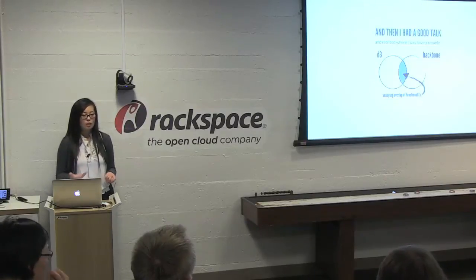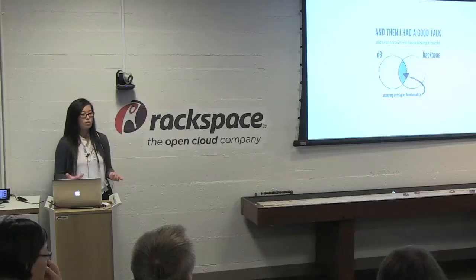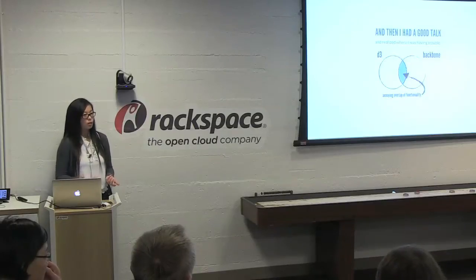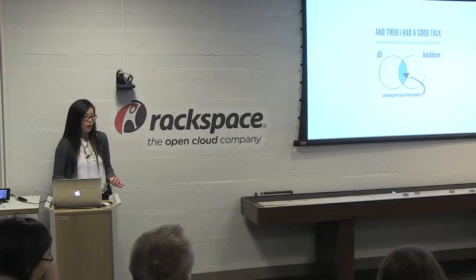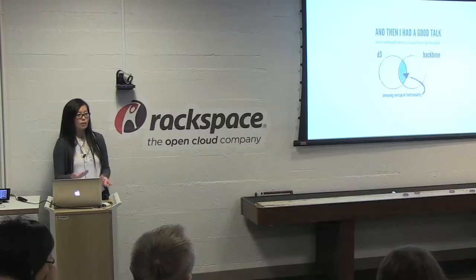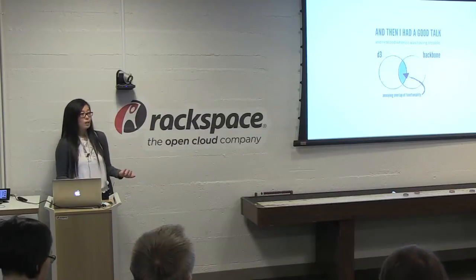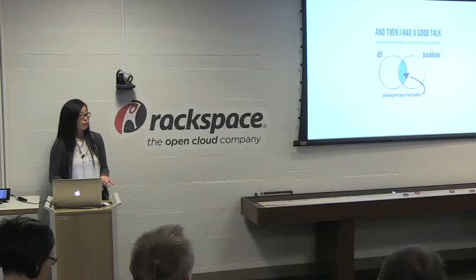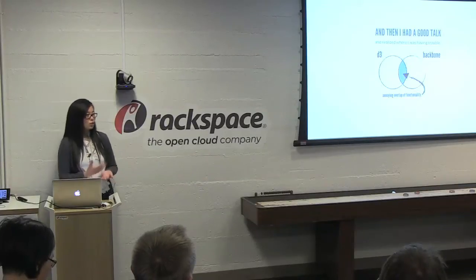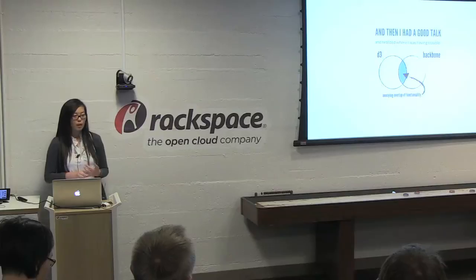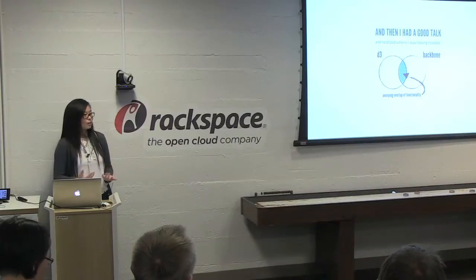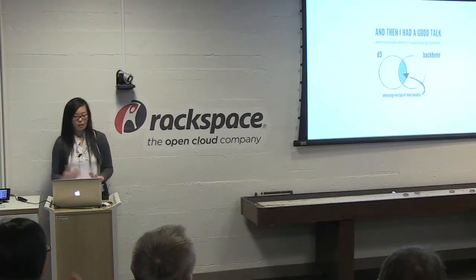Then I had a really good talk with Ian, one of the organizers of the Bay Area D3 meetup group. My problem lay largely in that really annoying overlap of functionality between D3 and Backbone — in the sense that they both try to manage data, and I was trying to let both of them manage my data, which caused a lot of confusion. He simply suggested: why don't you just let each of them do what you like them to do? You like Backbone because it does great data management, and you like D3 because it does great rendering — just have them do what they're good at. In retrospect it's such a simple solution, but it gave me great clarity.